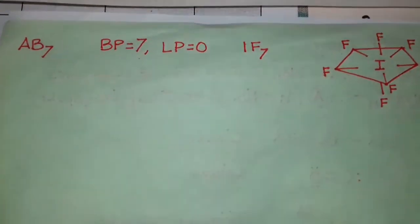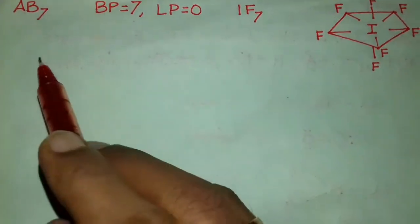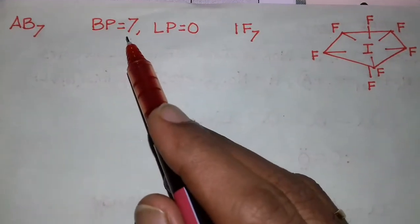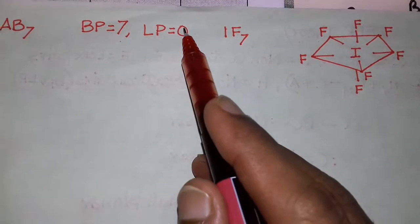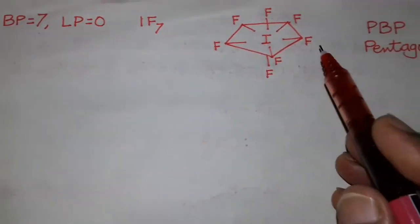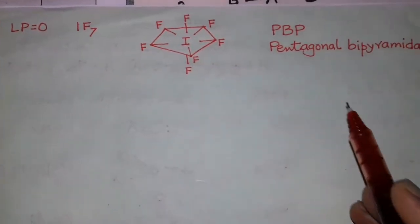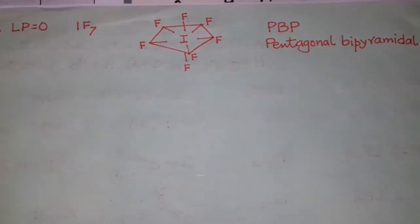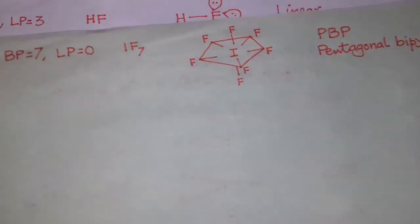The last case is AB7: bond pair 7 and lone pair 0 — IF7 — with normal pentagonal bipyramidal shape.